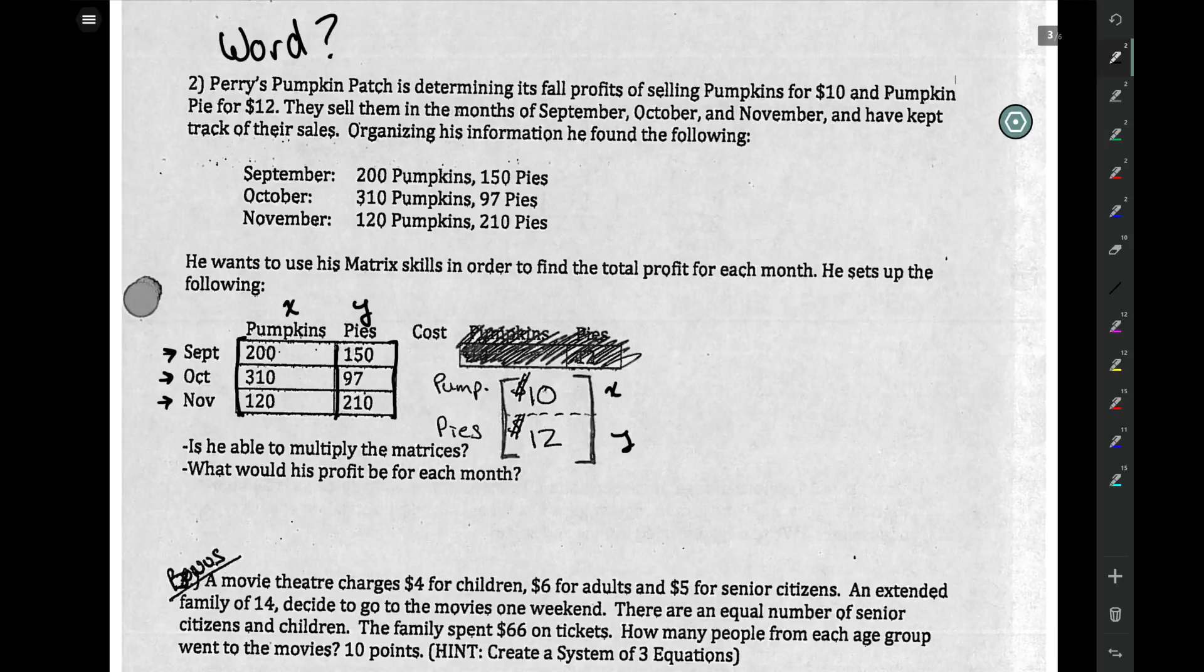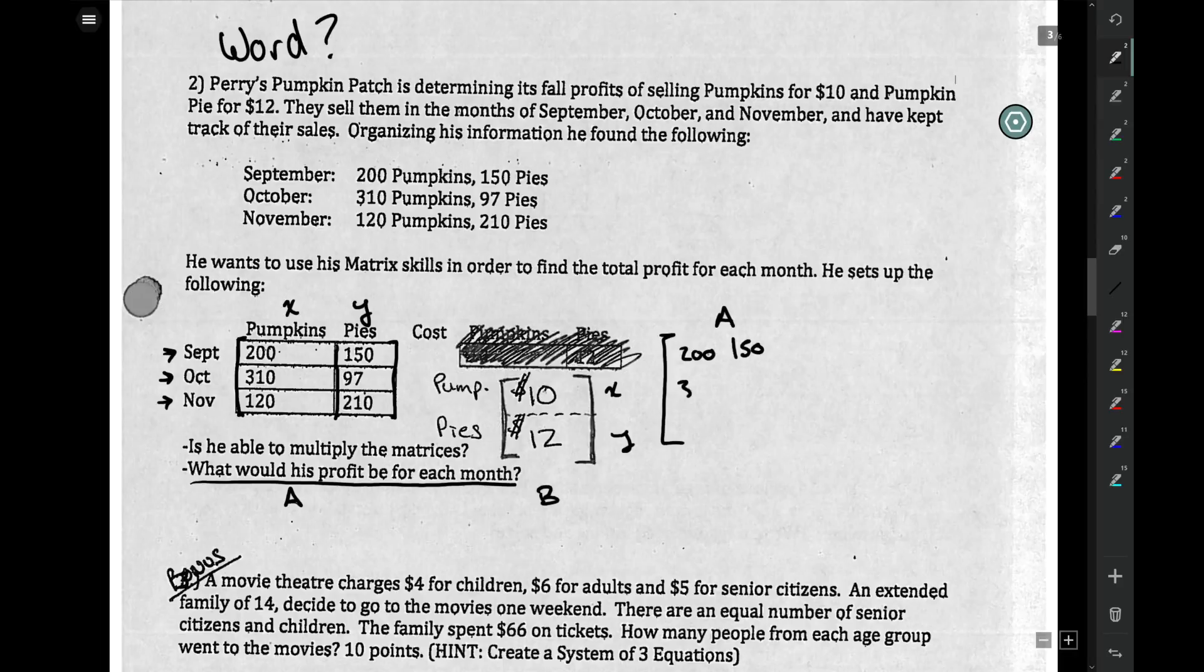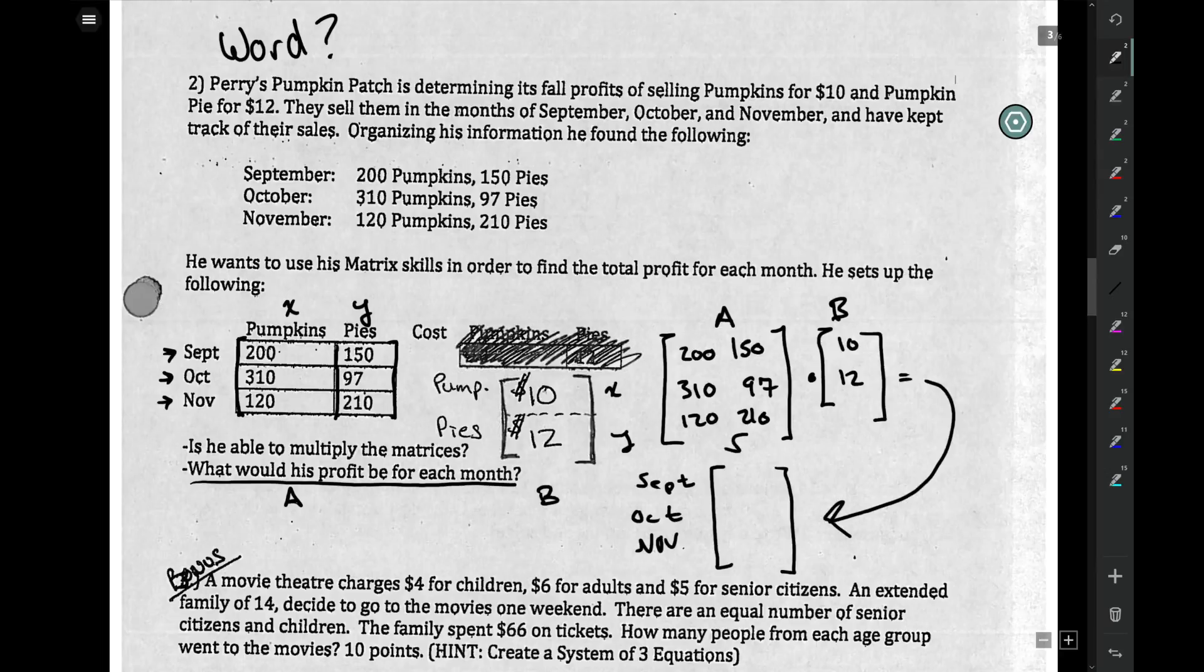The easy thing is, these two matrices, if we set them up as A and B, in order to find his profit for each month, you just need to multiply matrix A, which would be 250, 310, 297, and 120, 210, times matrix B. So multiplying the two matrices, you'll get a three by one matrix back out.